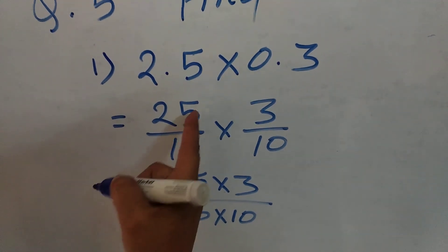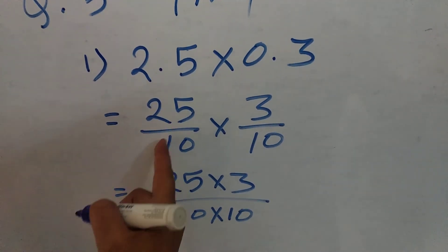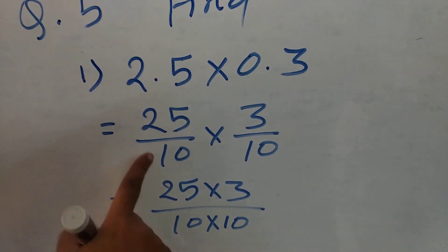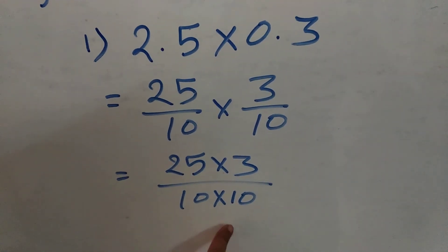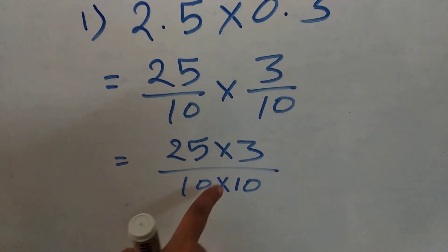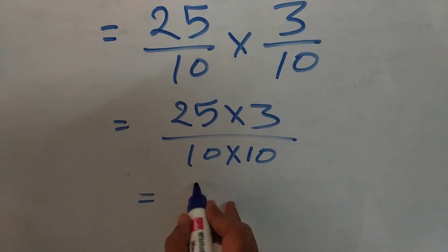And students, if, though it is divisible by 5, don't divide it here. Why? Because we need the denominator, 10, 100, 1000, then we can convert into decimal. So, it is 75.